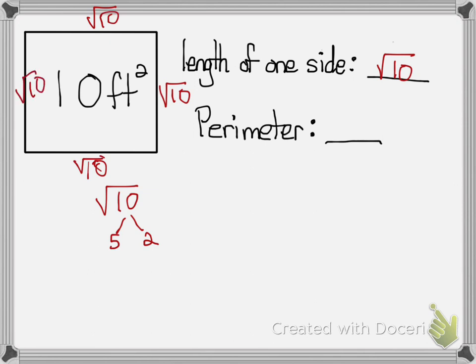To find the perimeter I'm adding all four sides. Remember the coefficient of just square root of 10 has an implied one in front, right? So that's all you're adding. And there's four of them. So it'll be 4 square root of 10 because I'm doing 1 plus 1 plus 1 plus 1 which equals 4.